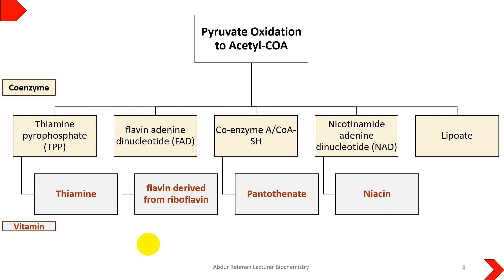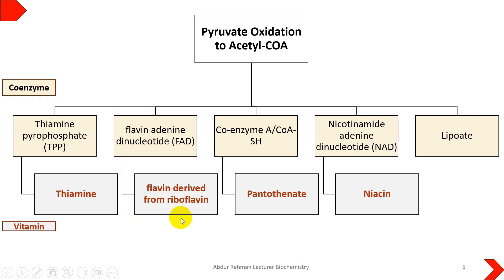The oxidation of pyruvate to acetyl-CoA requires five different coenzymes, and four of these require certain vitamins to assist in the conversion. The coenzymes involved include thiamine pyrophosphate (TPP), which requires the vitamin thiamine, and flavin adenine dinucleotide (FAD), which requires the vitamin riboflavin.